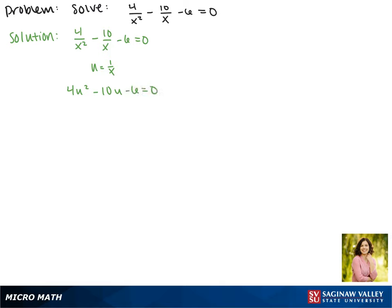Now since all of these coefficients have a factor of 2, we can divide both sides by 2, making this 2u squared minus 5u minus 3 equals 0.